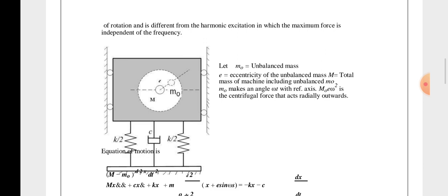e is the eccentricity of the unbalanced mass. M is the total mass of machine including the unbalanced m0. It makes an angle ωt with reference axis. m0 e ω² is the centrifugal force and that acts radially outwards.